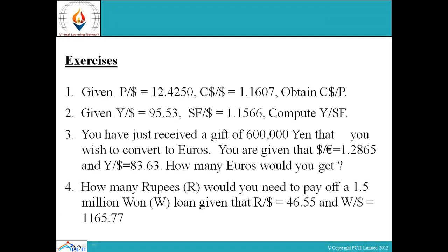Exercise: given P per dollar equals 12.4250 and CS per dollar equals 1.1607, obtain CS per P. Question 2: given Y per dollar equals 95.53 and SF per dollar equals 1.1566, compute Y per SF. You have just received a gift of 6 lakh yen to convert to euros — given dollar per euro equals 1.2865 and Y per dollar equals 83.63, how many euros would you get? Next question: how many rupees would you need to pay off a 1.5 million loan, given rupees per dollar equals 46.55 and bond per dollar equals 1165.77?